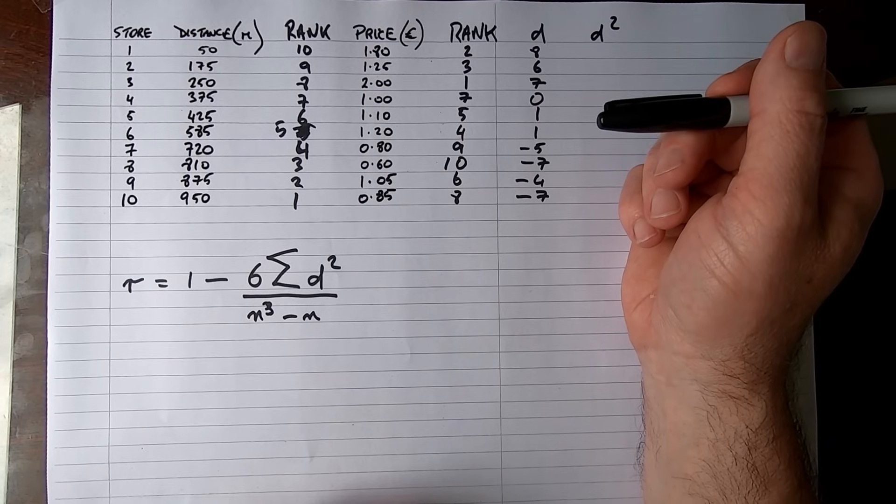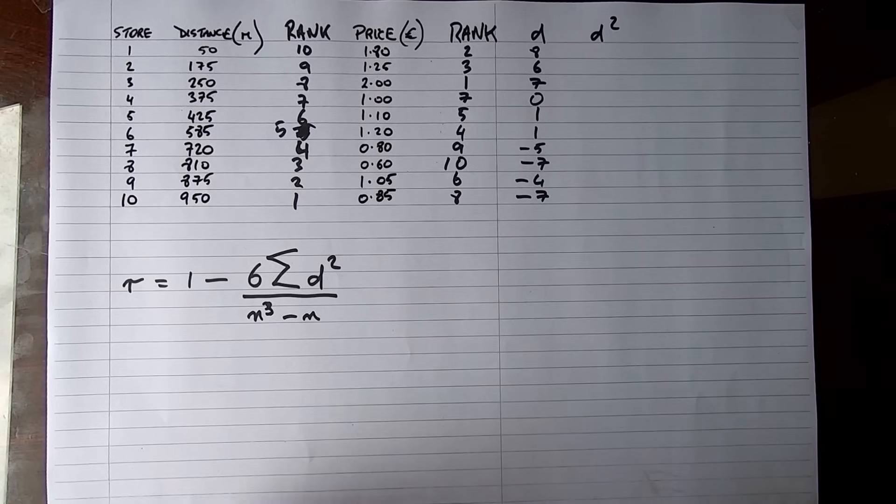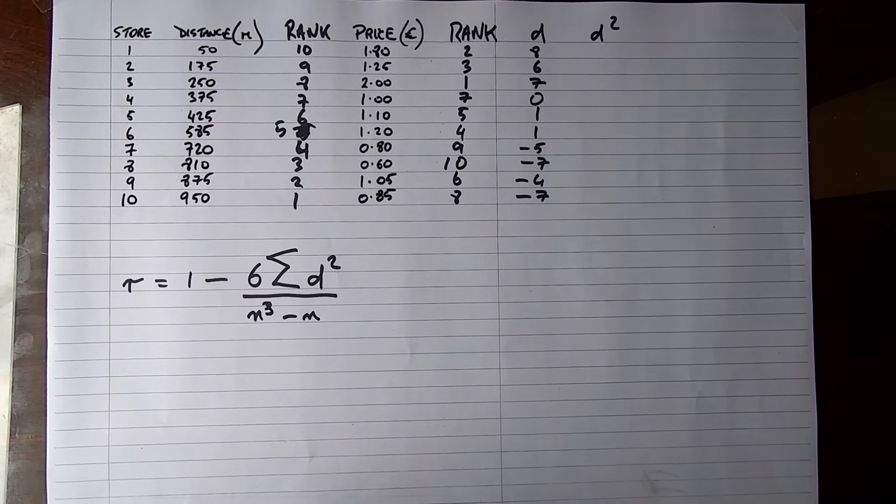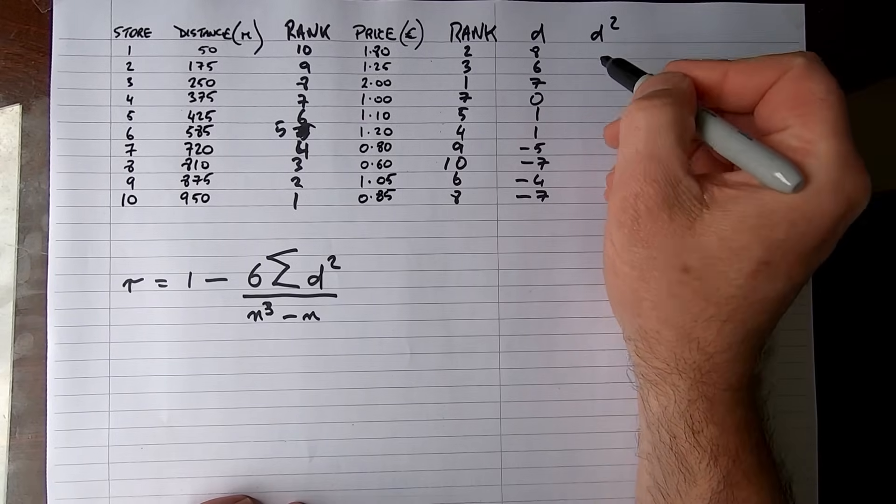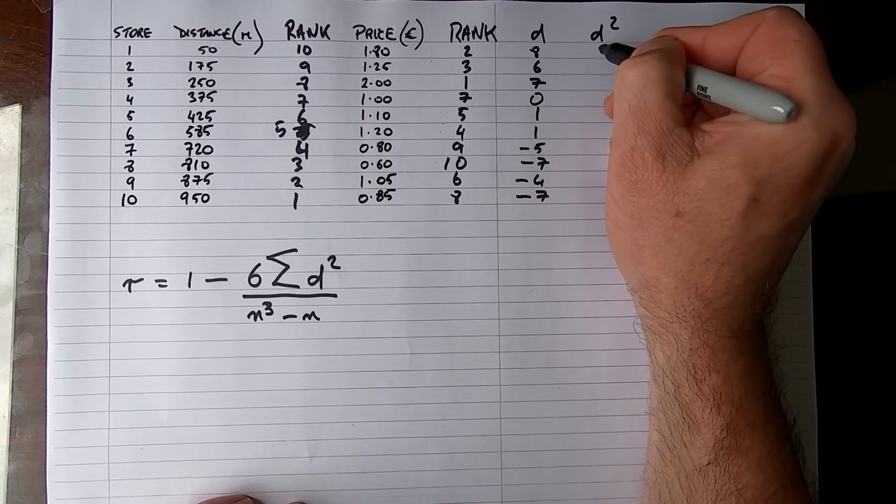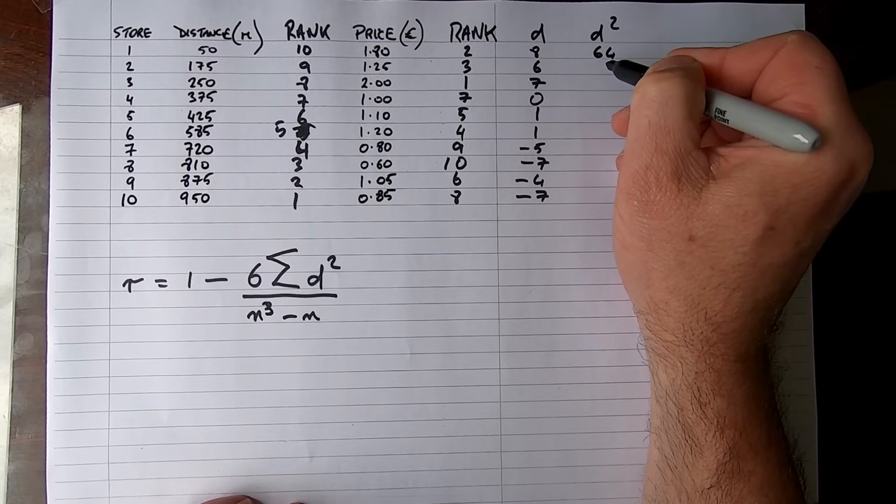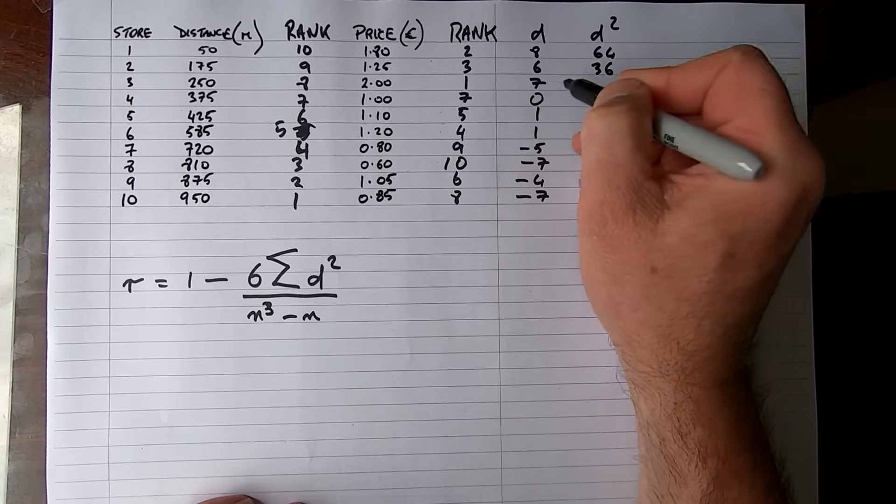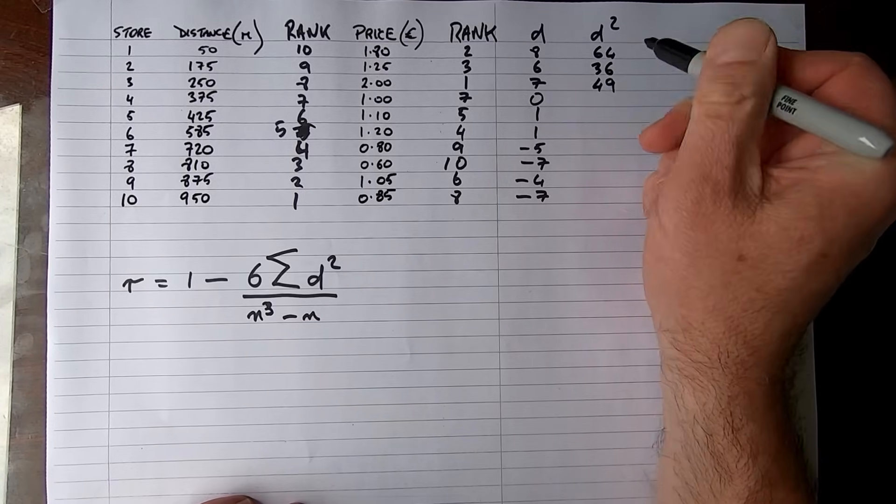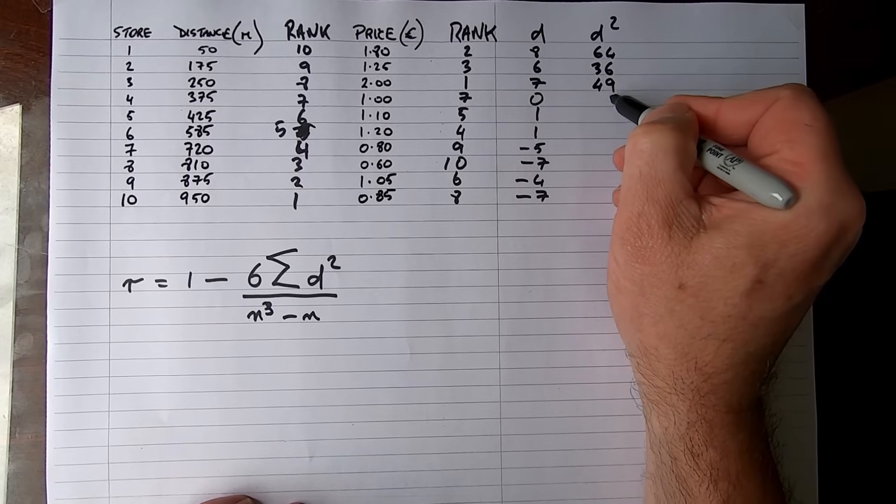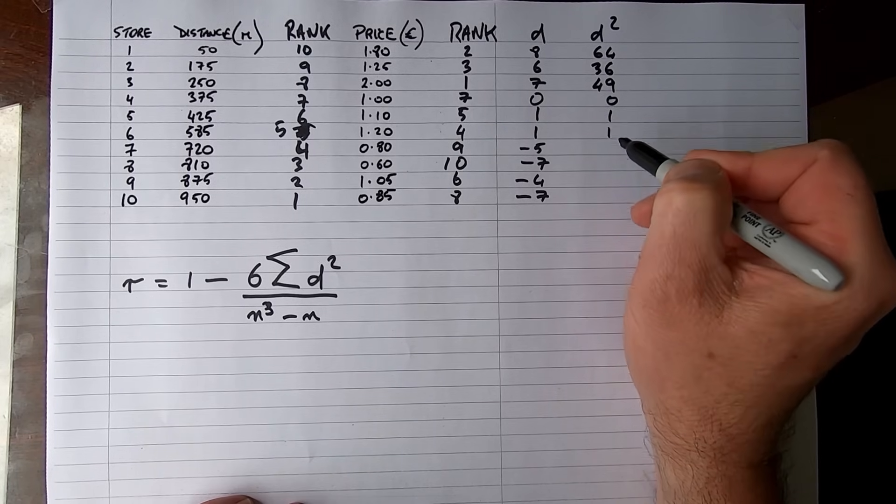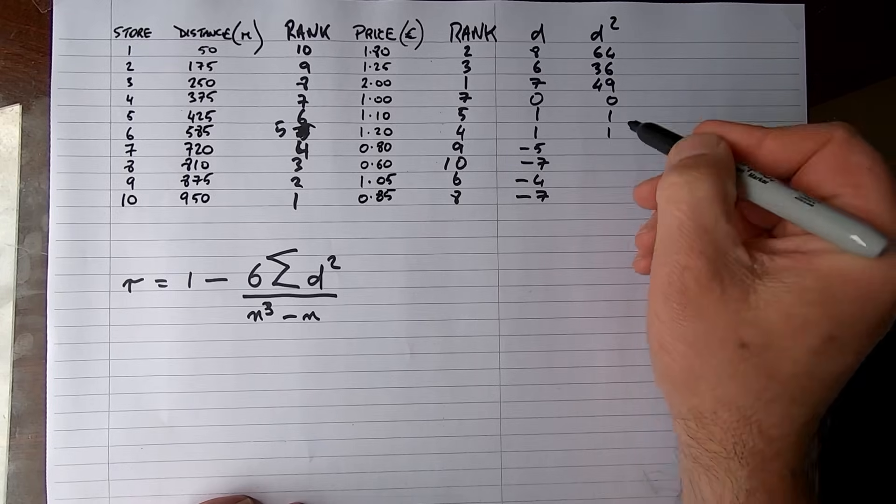So d here, we've got our differences. Now we need to square them, so we'll do this in my head. 8 times 8 is 64, 6 times 6 is 36, 7 times 7 is 49, 0 times 0 is 0, 1 times 1 is 1, 1 times 1 is 1.